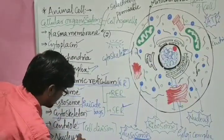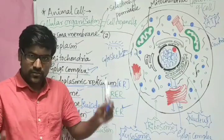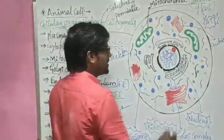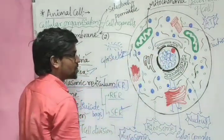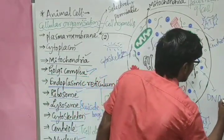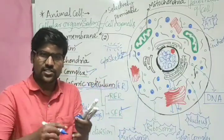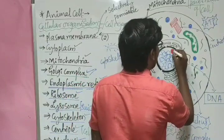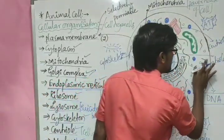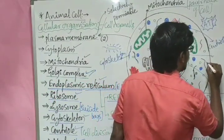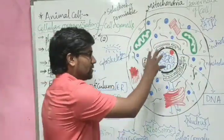The last and major organelle is the nucleus. This is the nucleus, and it is considered the control center of the cell — not in terms of position, but because it controls all the activities of the cell. The nucleus is covered by a double-layer membrane, similar to the plasma membrane. Inside the nucleus, the major material is DNA — Deoxyribose Nucleic Acid — present in a thread-like structure. Inside the nucleus there is also a smaller center called the nucleolus.